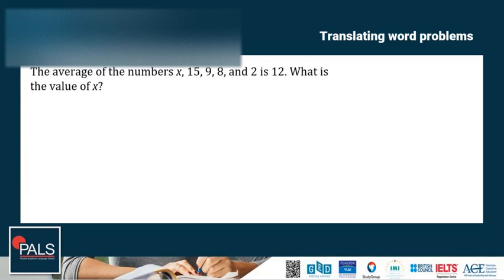Another example. The average of the numbers x, 15, 9, 8, and 2 is 12. What is the value of x? This question requires the use of the average formula. To find the average, add the numbers and then divide the sum by the number of numbers. If the average is 12, then we have x plus 15 plus 9 plus 8 plus 2 divided by 5 is equal to 12. Simplifying, we get x plus 34 over 5 is equal to 12.